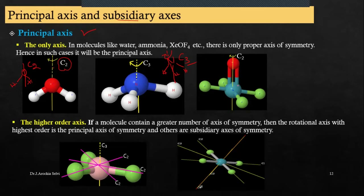Similarly, xenon tetrafluoride — here also only one C2 is present, so that will be the principal axis. So a molecule containing only one axis is said to have that as the principal axis.